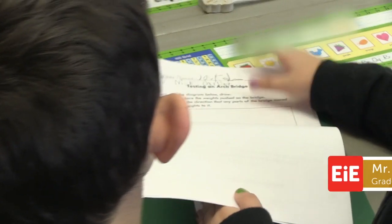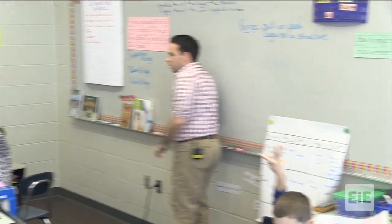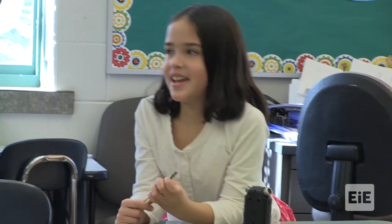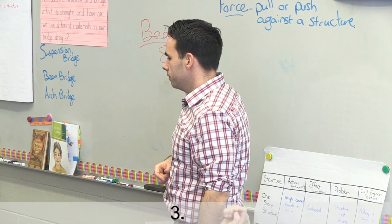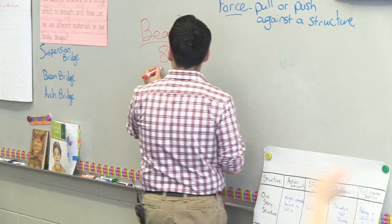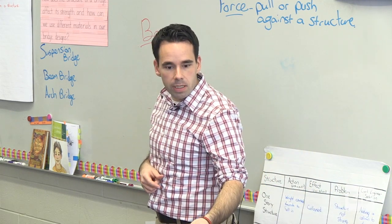'Take out from your green folders your data sheets for me, please — the ones that have all the bridge information on it. Which was the bridge that held the least amount of weight?' One student answers 'The beam' with a score of eight, while another group reports only two weights. As students share their results, Steve can't hide his surprise, but he doesn't attempt to explain the discrepancies. Instead, he asks his students to come up with explanations.